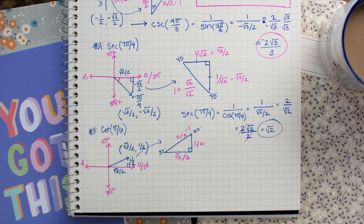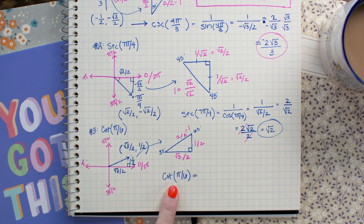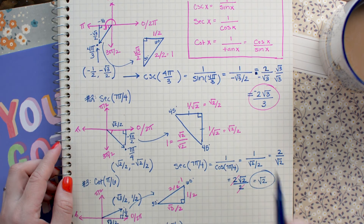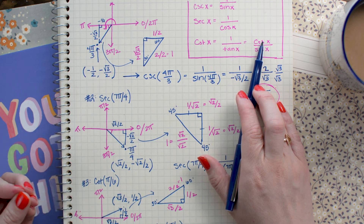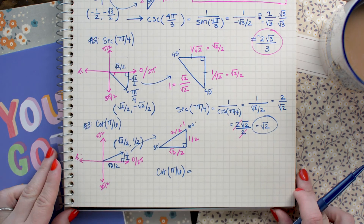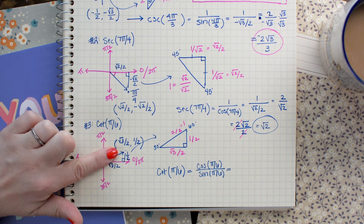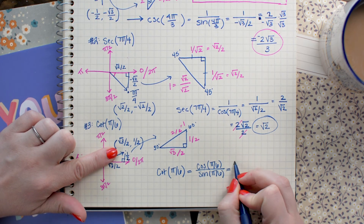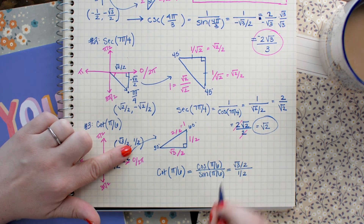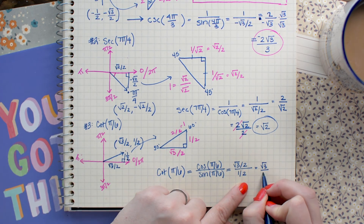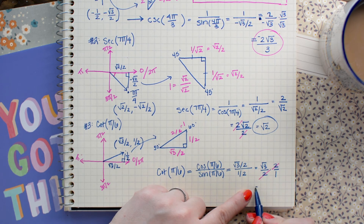Now we evaluate cotangent of π over 6. Using the identity where cotangent equals cosine over sine, that's the x-coordinate over the y-coordinate. Cosine is square root 3 over 2 at π over 6, and sine is 1 half. Flipping and multiplying, I can cross-cancel the 2s, and I end up with simply square root 3.